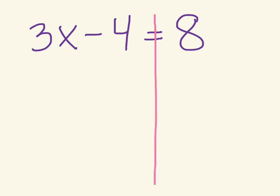So our first example is 3x minus 4 equals 8. Now the first thing that I want to get rid of, first I'm going to draw a line down my equals sign because that shows that each side needs to be balanced, needs to be equal to the same thing.